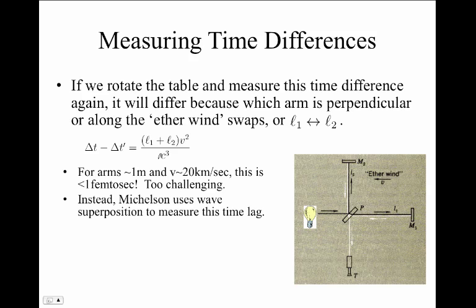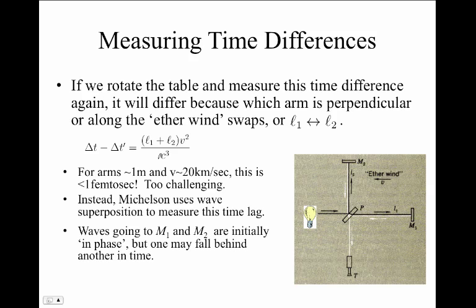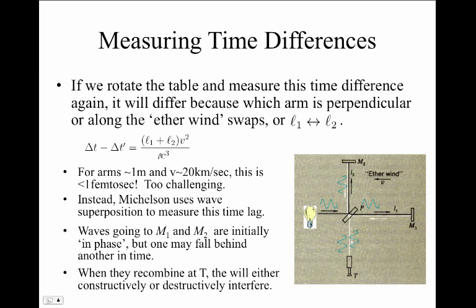Instead, Michelson had to use the idea of wave superposition to measure this time lag. The waves traveling to M1 and M2 are initially in phase, which means there's a wave pulse or a wave train traveling toward the beam splitter, and that wave train has the same crests and troughs happening in sequence or in phase as they head toward M1 and M2. But because the propagation to M1 and M2 are slightly at different speeds, then the waves reflected off those mirrors and heading back toward the telescope will be slightly out of phase with respect to one another. In that case, they can either constructively or destructively interfere.